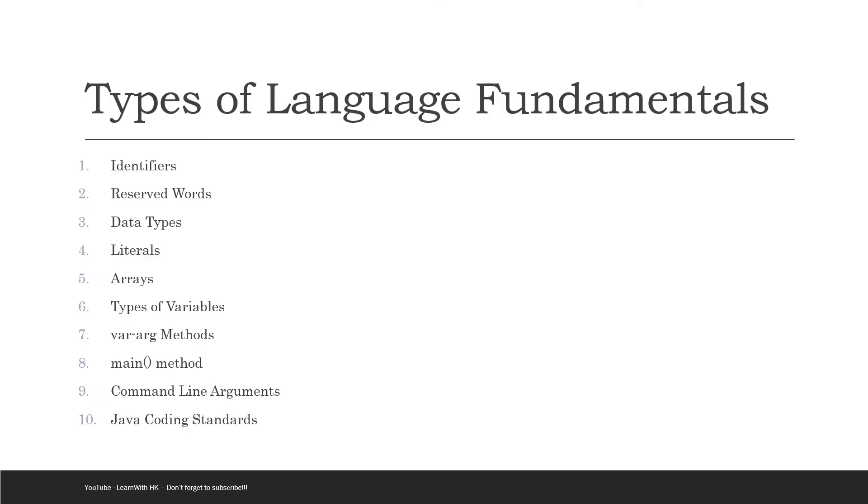In general, there are 10 types of language fundamentals. We're starting with very basic. The first one is identifiers, then reserve words, data types, literals, arrays, types of variables, vararg methods, main method, command line argument, and Java coding standards.